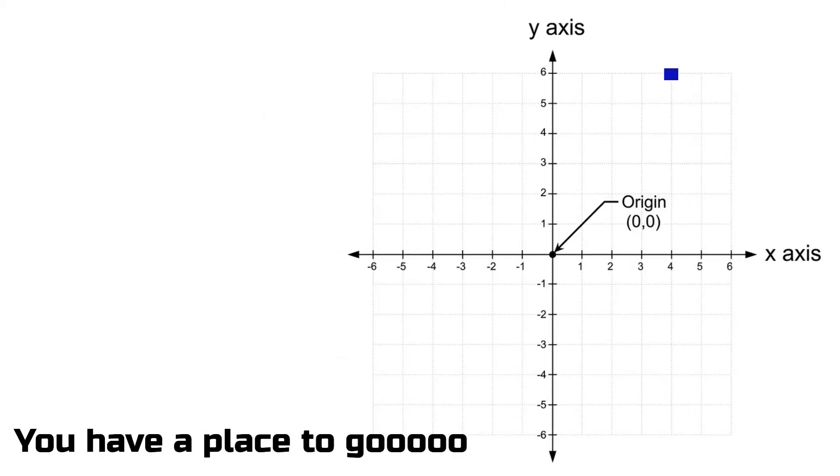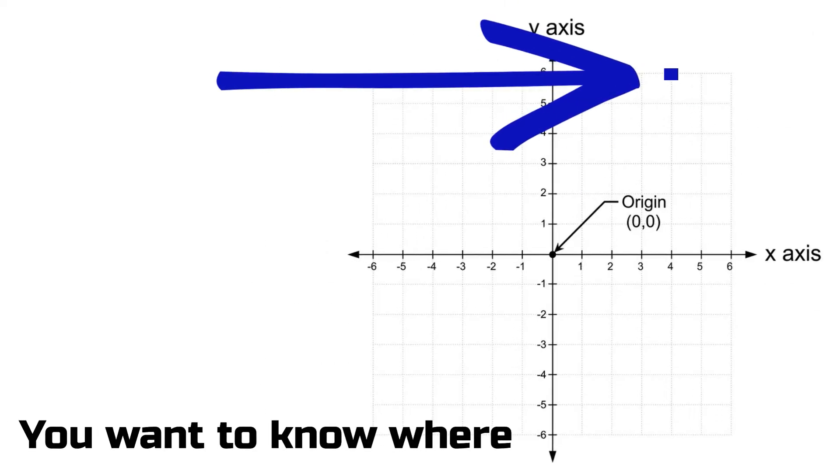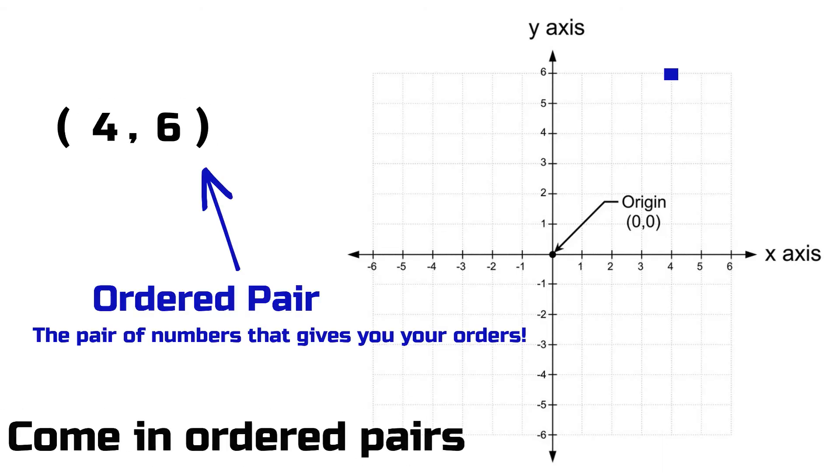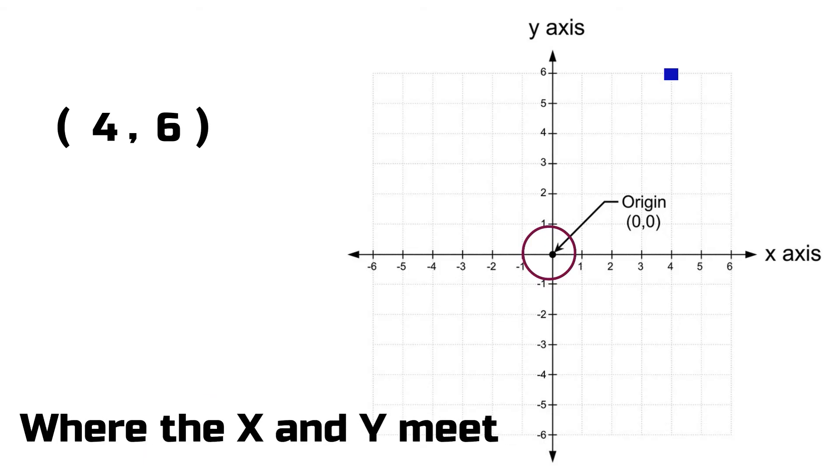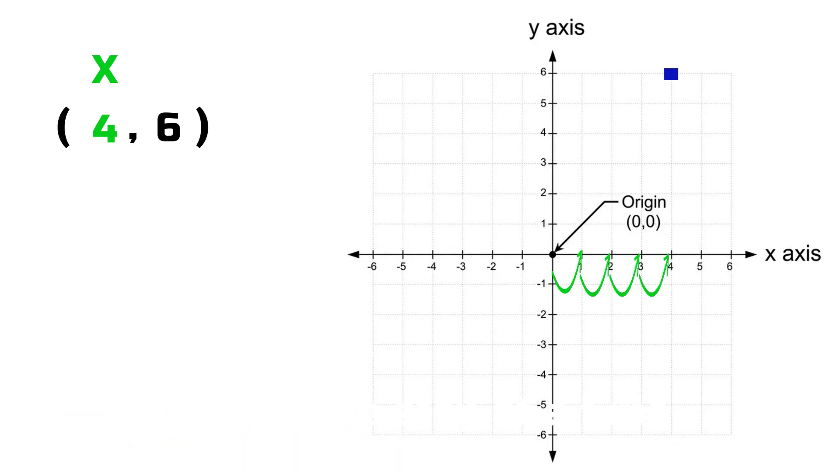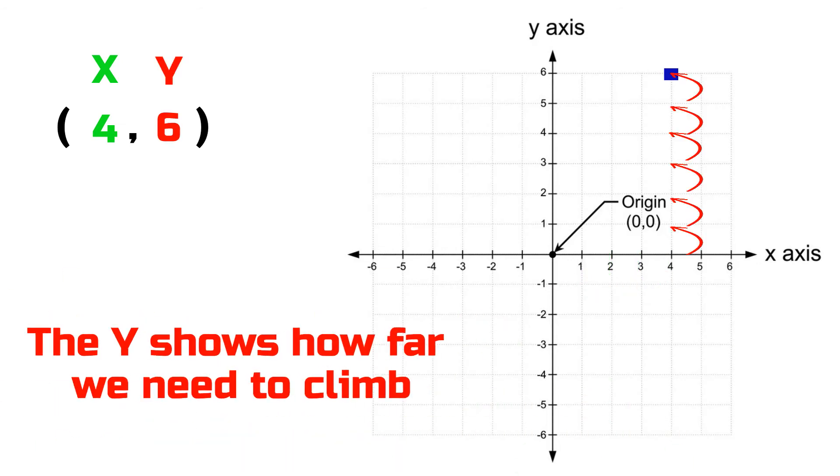You have a place to go when you want to know where. Directions for this map come in ordered pairs. The origin is where we start, where the X and Y meet. The first number in the ordered pair shows how far we need to shuffle our feet. Take it one step at a time. The second number in the ordered pair shows how far we need to climb or fall.